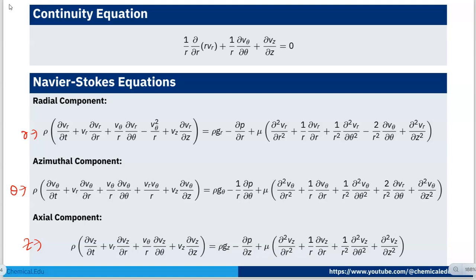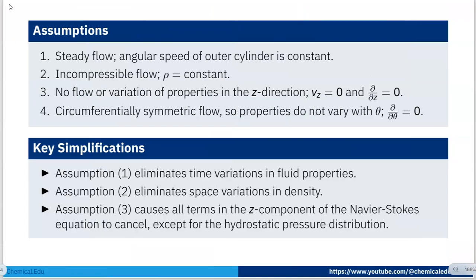Now we apply simplifying assumptions. First: steady flow, since the angular speed of the outer cylinder is constant. Second: incompressible flow, so density ρ is constant. Third: no flow or variation of properties in the z-direction, meaning v_z = 0 and ∂/∂z = 0. Fourth: circumferentially symmetric flow, so properties do not vary with θ, meaning ∂/∂θ = 0.